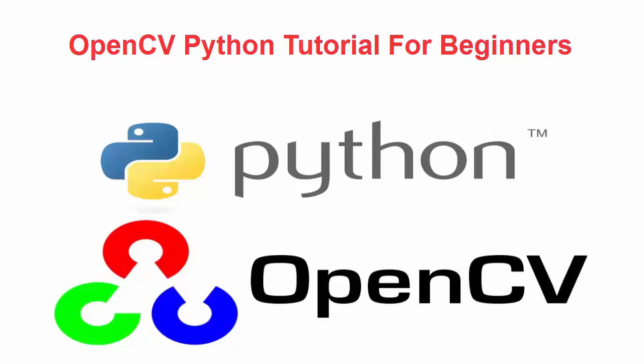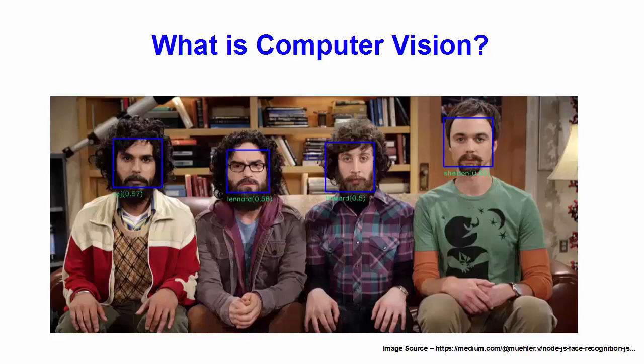First of all let's see what is computer vision, because OpenCV is an open source computer vision library. Computer vision is the way of teaching intelligence to machines and making them see things just like humans. When a human sees an image, he will be able to recognize the faces inside the images. In its simplest form, computer vision is what allows computers to see and process visual data just like humans. Computer vision involves analyzing images to produce useful information.